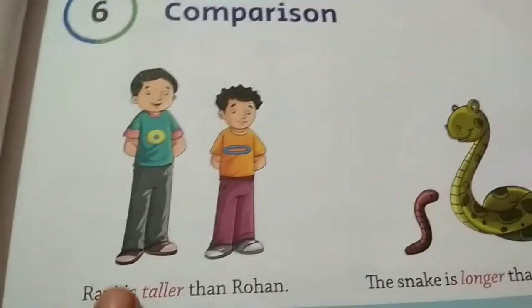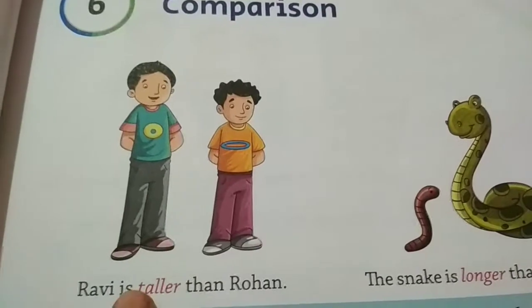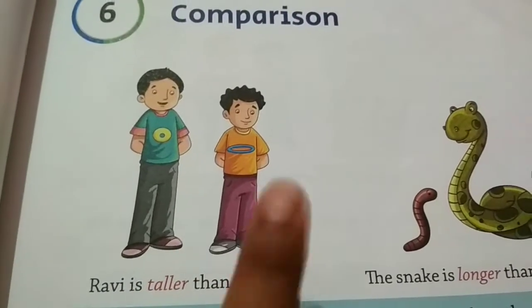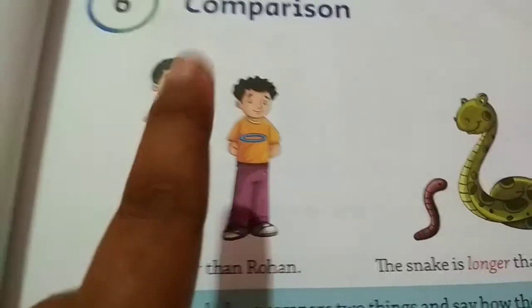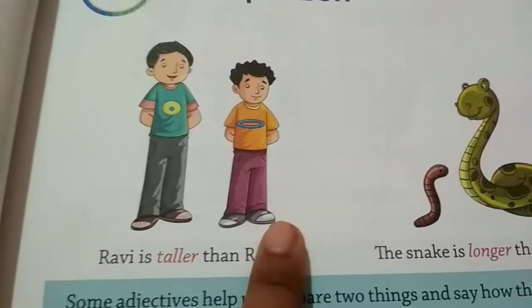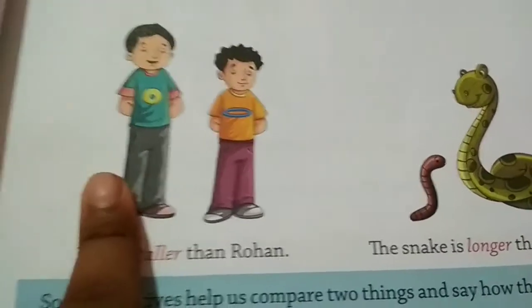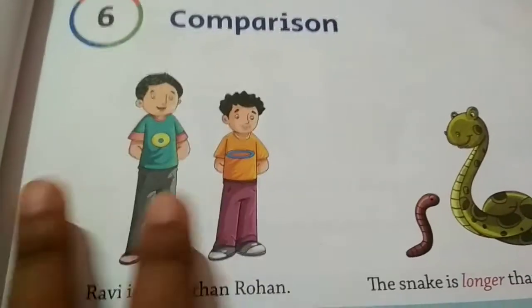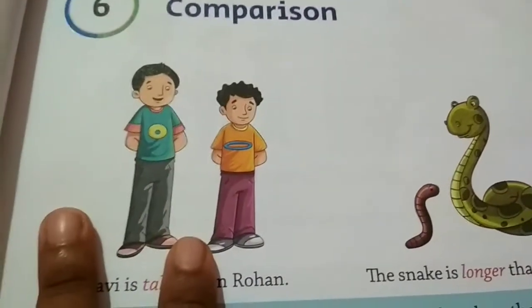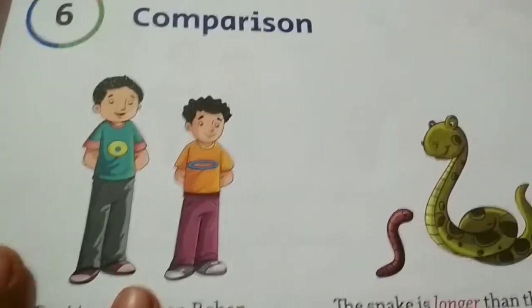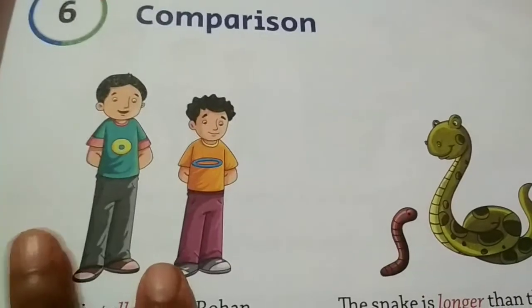So first, picture C: Ravi is taller than Rohan. He is Ravi and he is Rohan, so he is taller. That's why we compare both the heights. It is called Comparison.